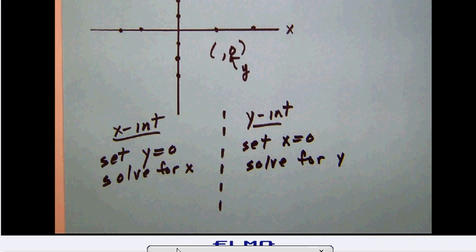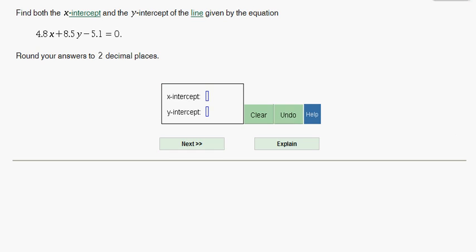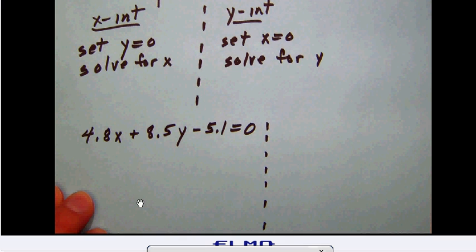Notice here in this case we have the situation: 4.8x plus 8.5y minus 5.1 equals zero. So let's take a minute and work on that problem now. Let's recall, if you want to solve for the x-intercept, what we're going to do is set the y equal to zero and then solve for x.